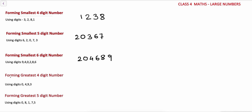Now let's see forming the greatest 4-digit number. To form a greatest digit number, we write all the digits in descending order. For the greatest 4-digit number using digits 0, 4, 9, 3 — writing in descending order gives us 9, 4, 3, 0. So the greatest 4-digit number is 9430.